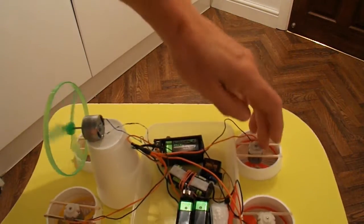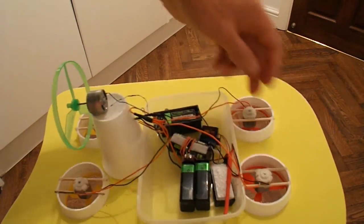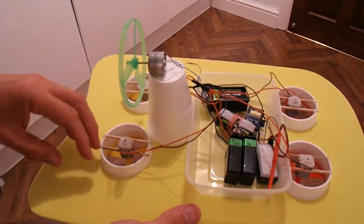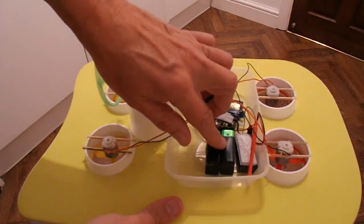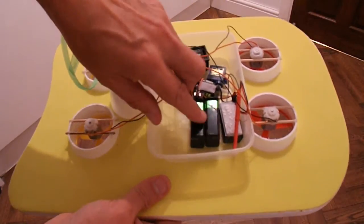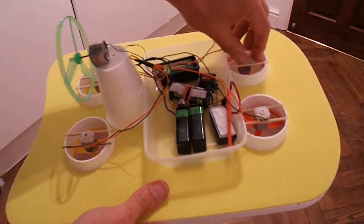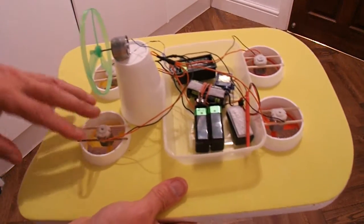So, those four cheap electric motors out of the vibrating toothbrushes are running off 9 volts. There's actually two 9-volt batteries there in parallel to make sure I've got plenty of current, but that's running those four motors.